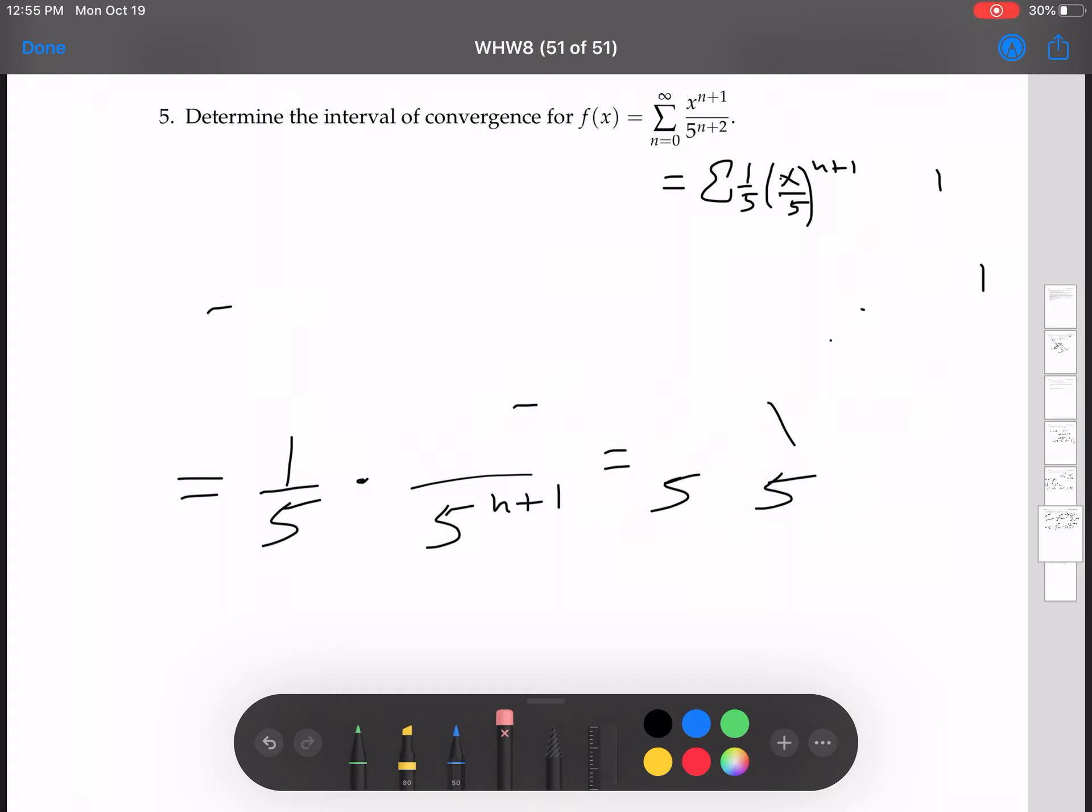And still, it's geometric. You can see the r is x over 5.